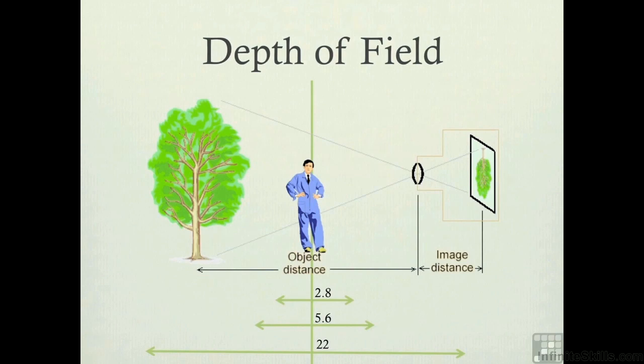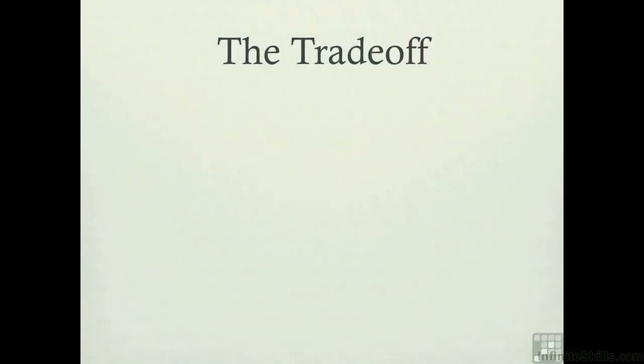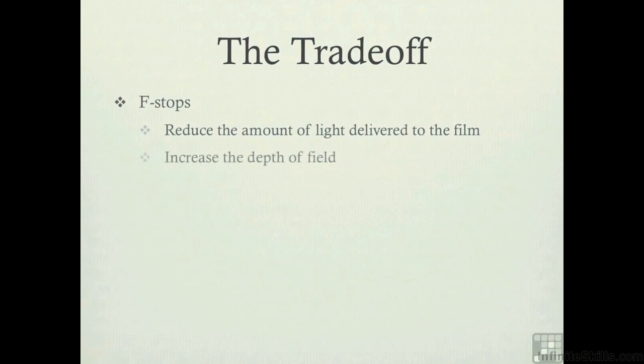But there is a trade-off, like anything else. The f-stop reduces the amount of light delivered to the film if you're cranking it down. But in return, it will increase how much is in focus, the depth of field. It's a balancing act with your film speed. How fast do I need my film speed because I want to do this? I've got to stop my lens down. That means I'm getting less light, so I need more film speed.